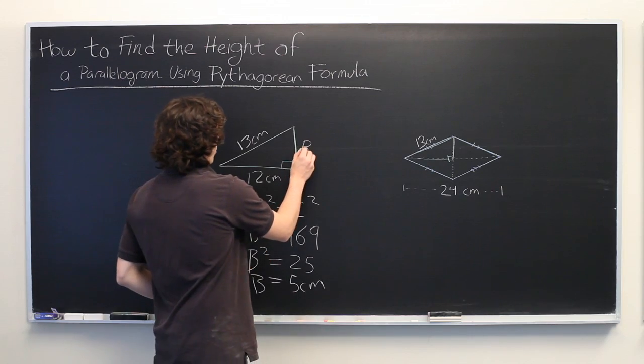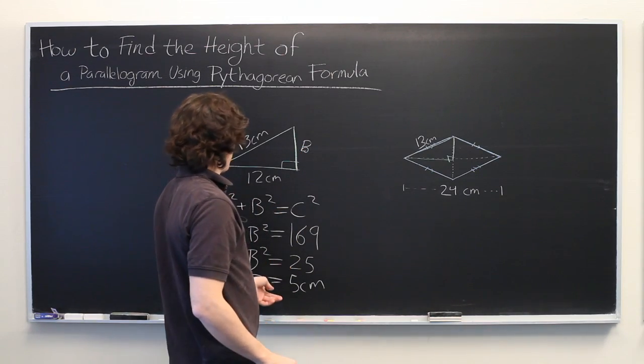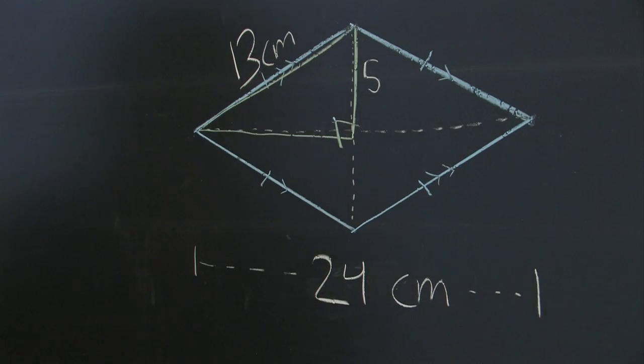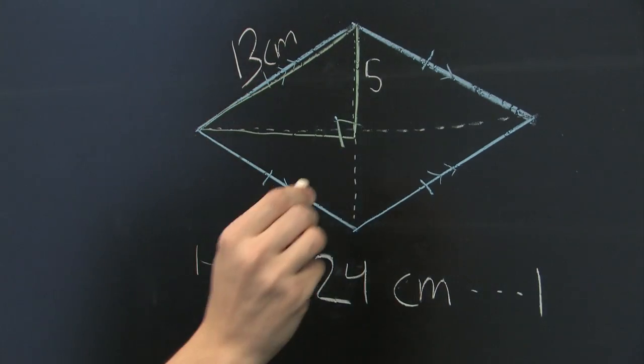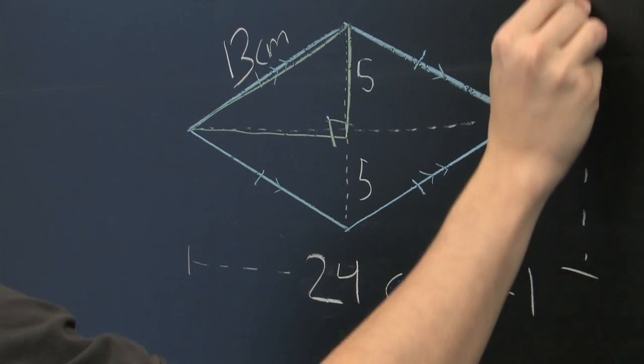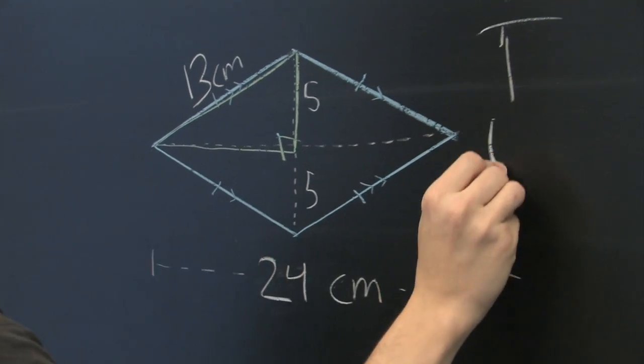We recall that B is one-half of our height. That's 5 centimeters. This will be 5 centimeters also. So the total height is going to be 10 centimeters.